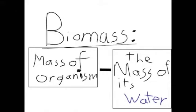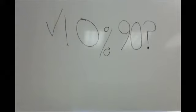The biomass of something is the total mass of the thing, minus the mass of its water. The 10% rule states that, when something eats or consumes something else, only 10% of the biomass is transferred.